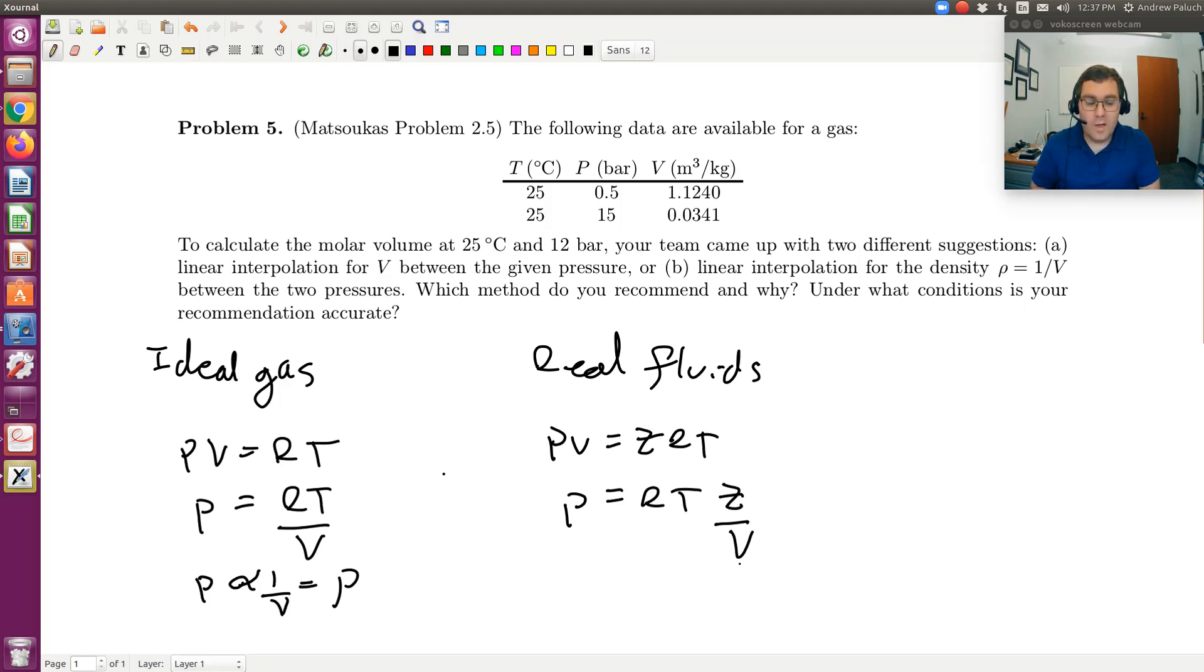But in general, it looks like it should be reasonable, as long as Z doesn't change much over P, and even at that, it's going to be a better methodology than interpolating with respect to V. So I'd say use density, inverse V.